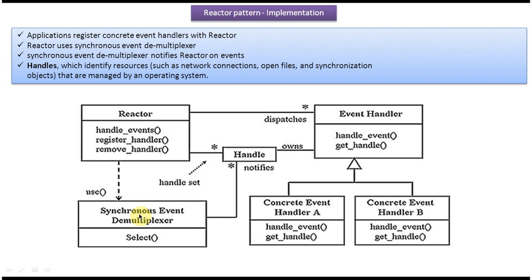So you can see this Event Handler is an interface. It has two methods: handle_event and get_handle. This interface is implemented by two concrete event handlers, Event Handler A and Event Handler B, which provide implementation of handle_event method and get_handle method.